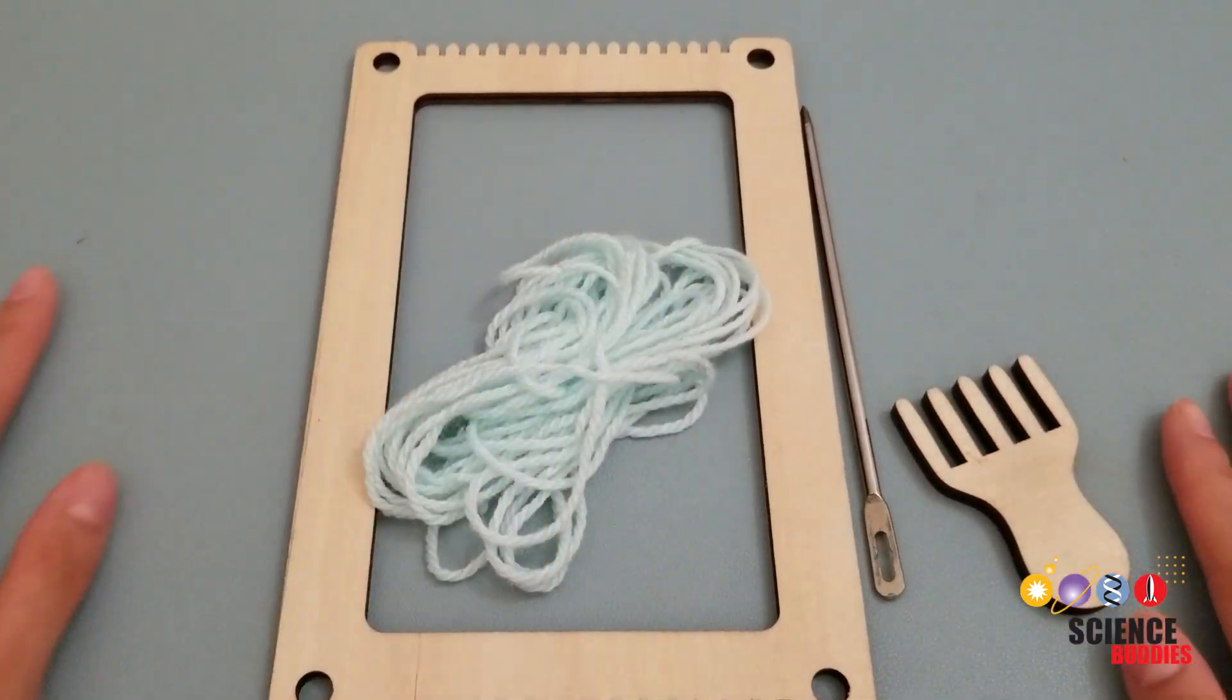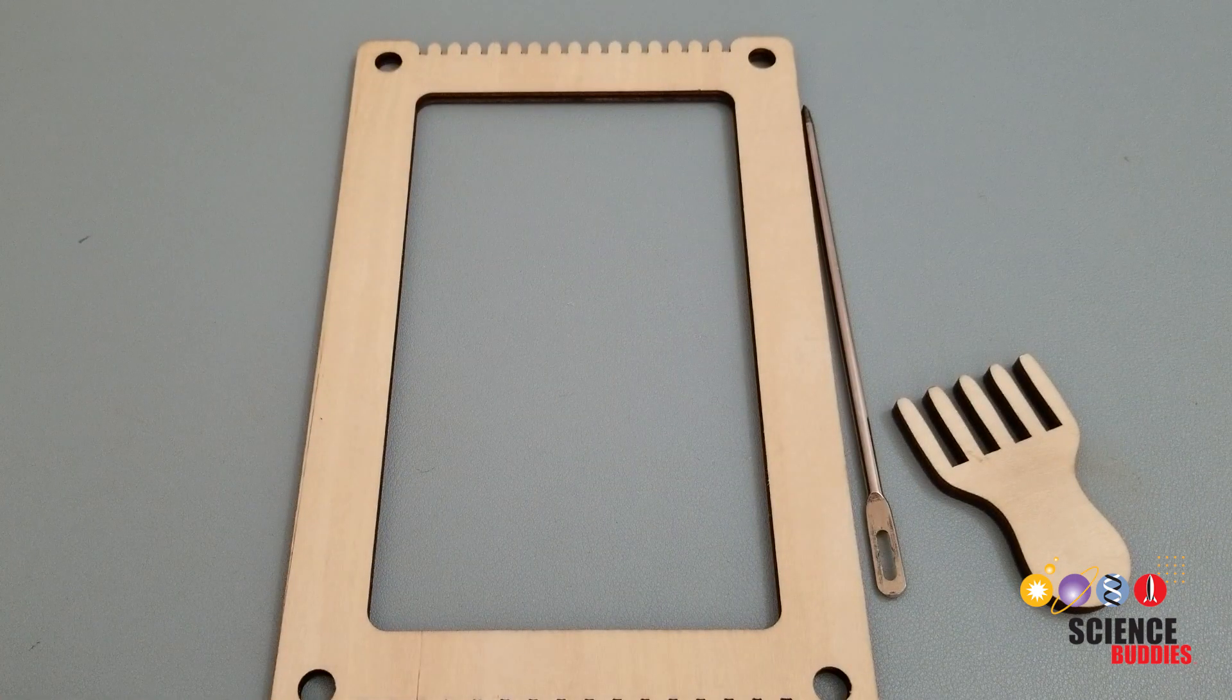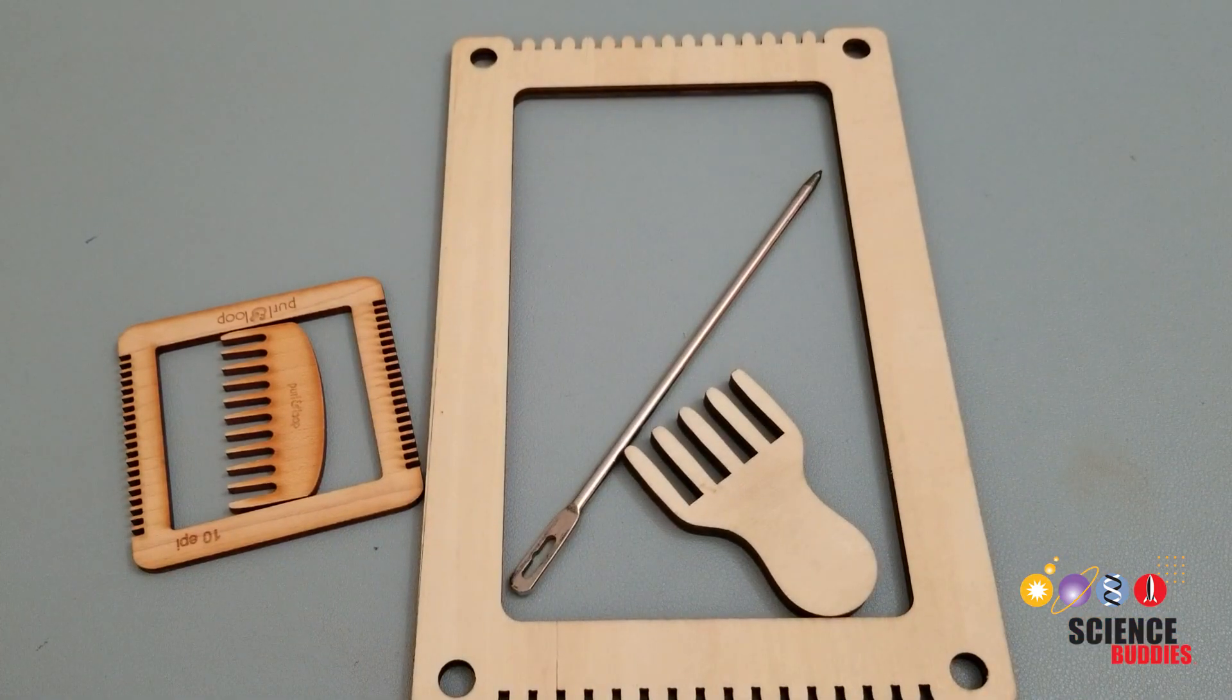Okay, now let's warp our loom. The warp yarn should be your non-conductive yarn of choice. Using a thinner yarn allows you to have a clean and easy weave. To set up your loom, you can use the directions that are provided by your kit.